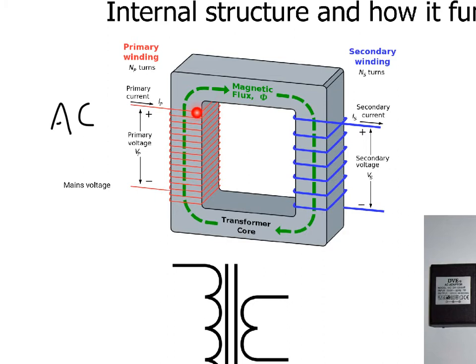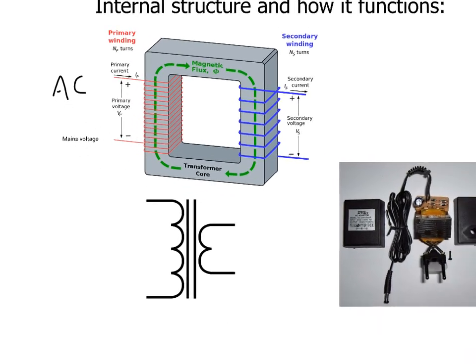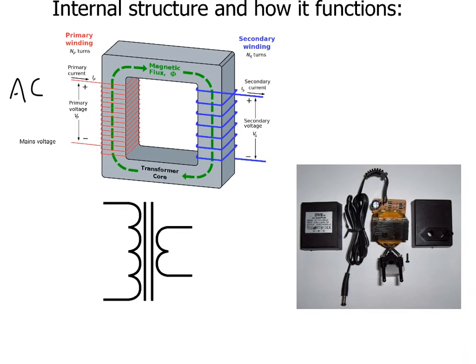You need alternating current in order for this to work because you need a changing magnetic field, not a steady one. Direct current would set up a steady magnetic field, and that does us no good because then there's no change. No change means there's no current flowing and nothing happens. So you need alternating current because the magnetic field then is constantly changing, flipping poles constantly, and that's going to cause a flux through this wire, magnetic flux, and that magnetic flux will cause a current to flow in this side. It's a bit complicated, but hopefully that makes sense to you.